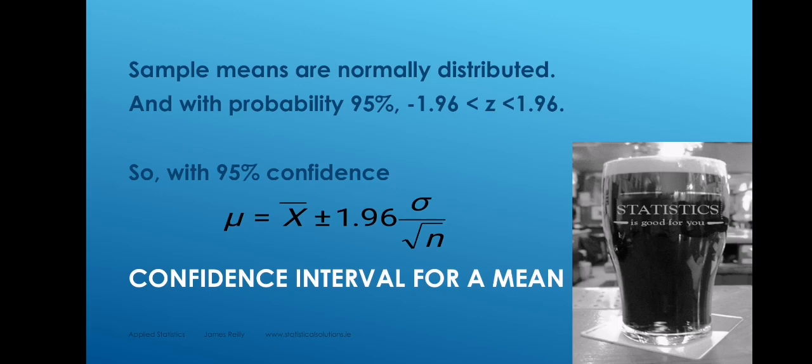Sometimes we do know sigma, the population standard deviation — we know it from past experience of studying that population or a similar one. But very often we don't know sigma. All we have is the sample, and so we can calculate s, the sample standard deviation. But that's not the same thing. Wouldn't it be great if we could somehow adjust this formula to use s rather than sigma? Then we would have all the information we need in the sample.